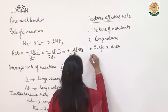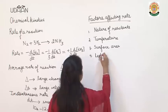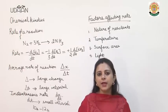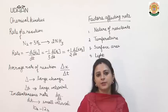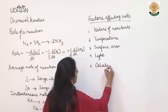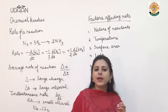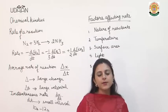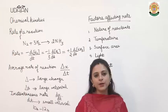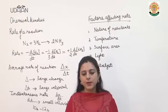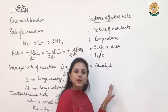Next is light. There are certain reactions which take place only in the presence of light — they are photochemical reactions and can be initiated only with light. Next is catalyst. Catalyst speeds up the reaction — the reaction takes place faster in presence of a catalyst. What does the catalyst do? It allows the reaction to follow a completely different path, which is why it speeds up the reaction.